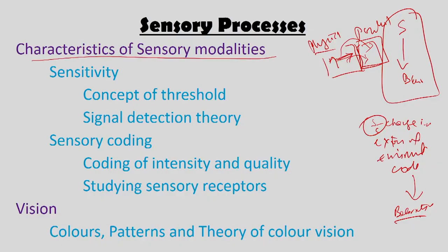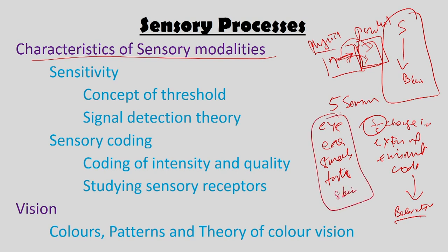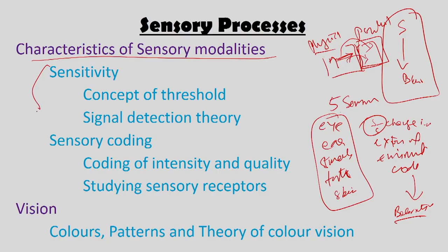We looked at what is sensory modality and the different modalities that humans have. Humans have five different sensory modalities: the eye, the ear, smell, taste, and skin. Each of these has receptors which can take in information from the external environment and code it into the psychological domain. Based on these codings, human beings react and make certain actions. Within sensory modality we looked at the idea of sensitivity and sensory coding.